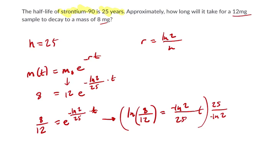In other words, we can multiply by 25 over the negative natural log of 2. So we get the natural log of 8 over 12, times 8 over 12 we can reduce that to two-thirds.